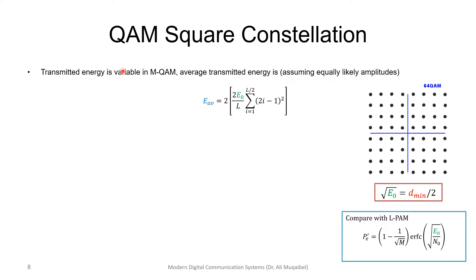If you look at the probability of error, we can write it in terms of the energy. But now the energy is not constant. We can define E naught to be related to the minimum distance. The energy for these points is D/2, or the minimum distance divided by 2, which is square root of E naught.